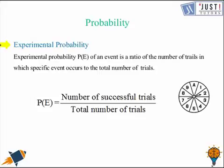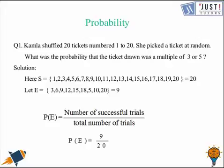Experimental probability P(E) of an event is a ratio of the number of trials in which specific event occurs to the total number of trials that we do. It is generally written as P(E) equals number of successful trials over total number of trials. Let's look at this with the help of first example here. Kamla shuffled 20 tickets numbered 1 to 20. She picked a ticket at random. What was the probability that the ticket drawn was a multiple of 3 or 5?